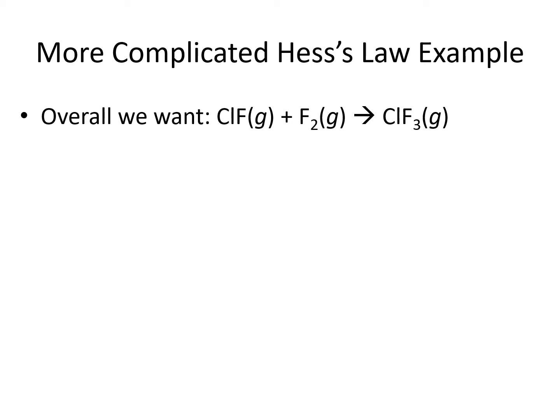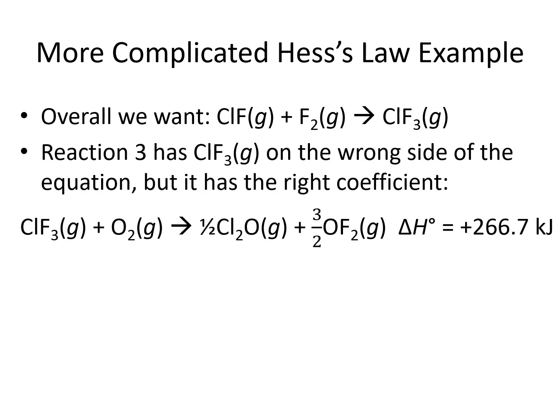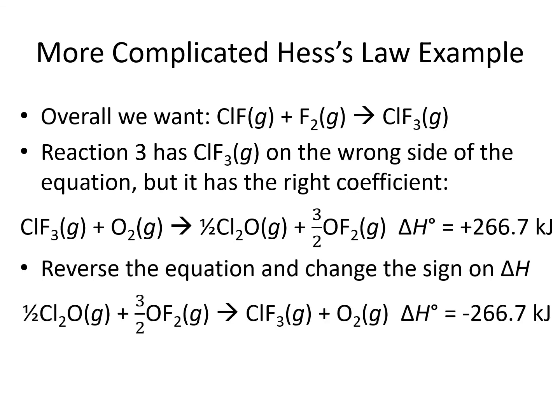Our third piece of the reaction that we're trying to get correct is the ClF3. We can find ClF3 in step reaction 3, but it's on the wrong side of the equation. We want it to be on the right on our product side, but in our step equation it's on the left. To fix it, we're going to have to reverse the step equation. The good news is that it has the correct coefficient, so all we have to do is reverse the equation and change the sign on our delta H from a positive to a negative. The manipulated delta H for step 3 is negative 266.7 kilojoules.